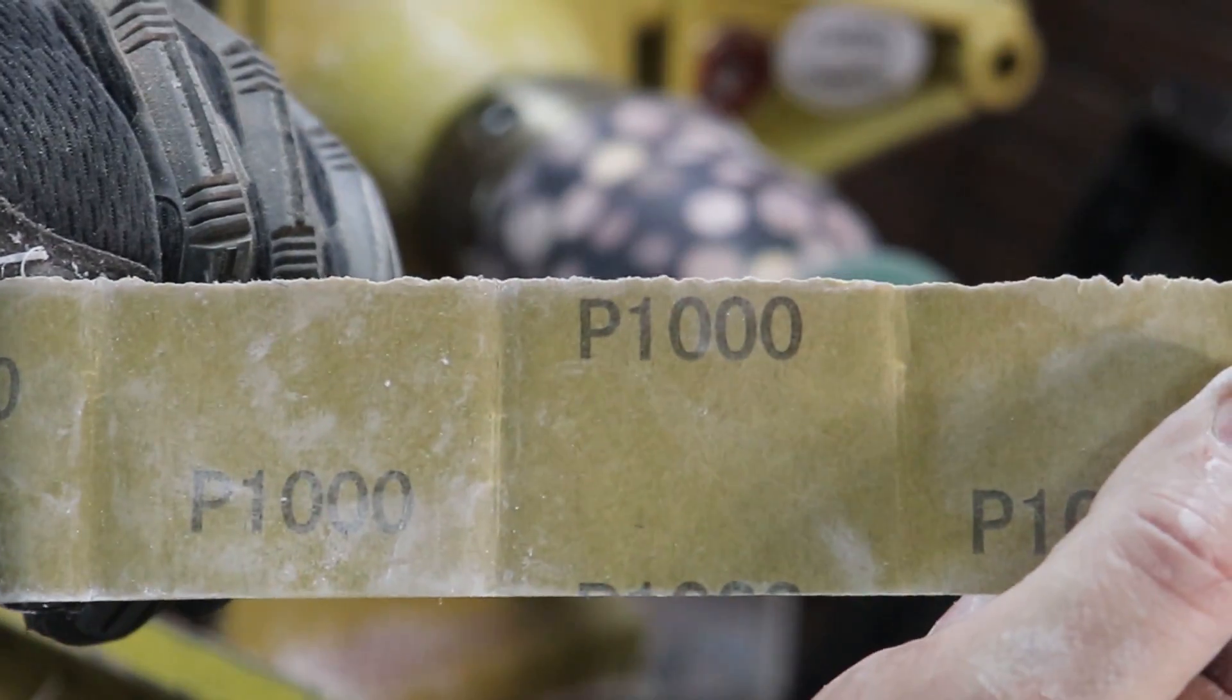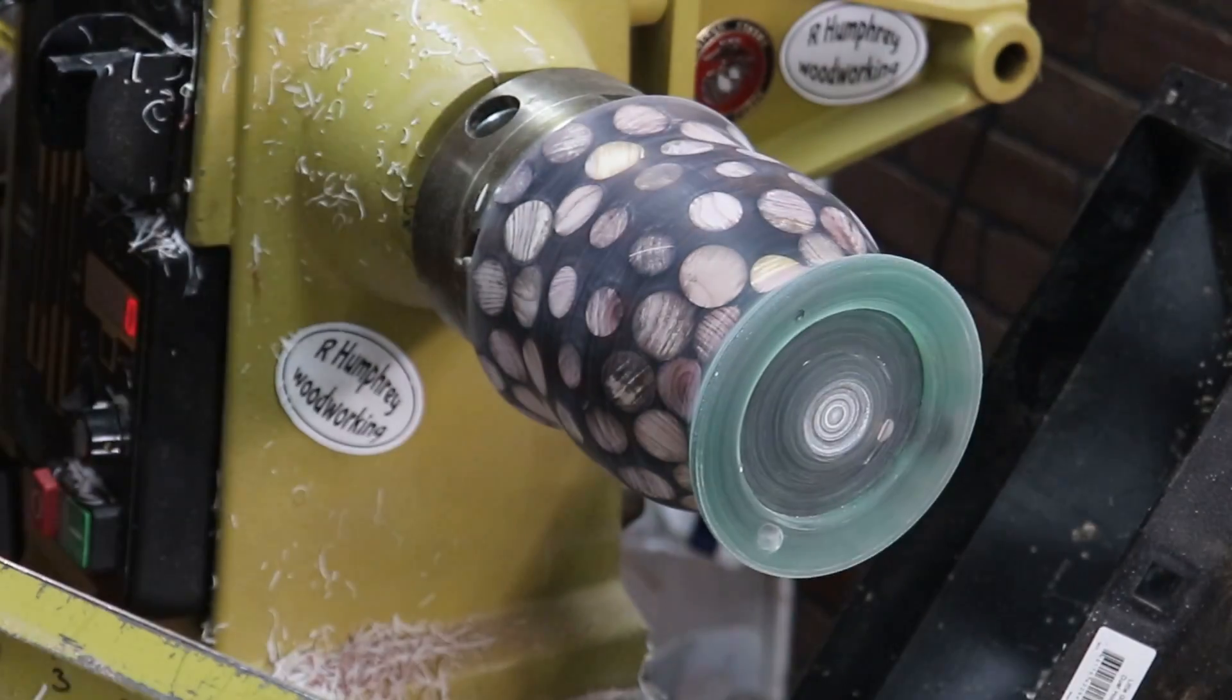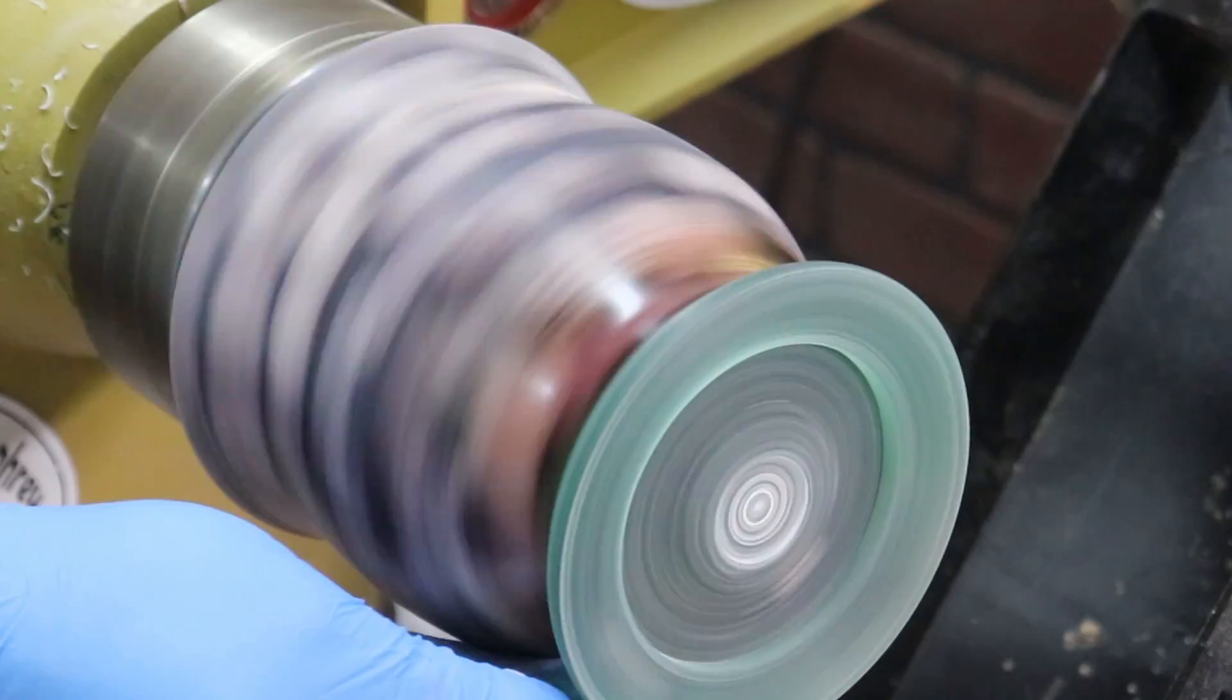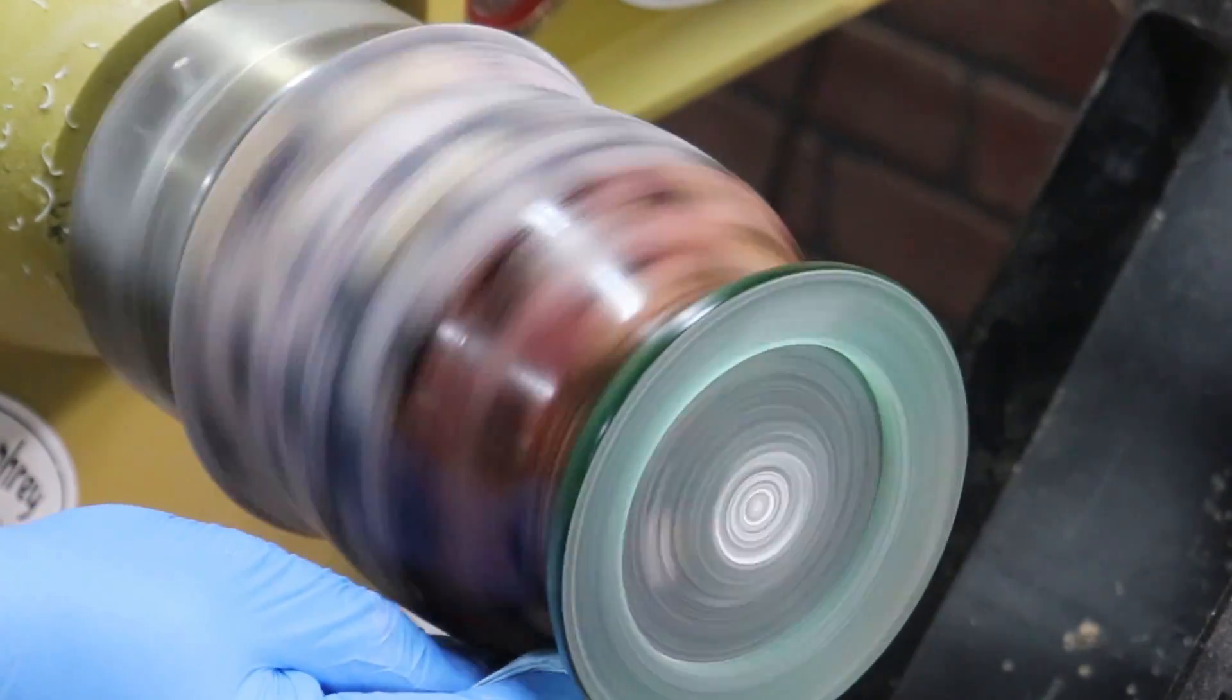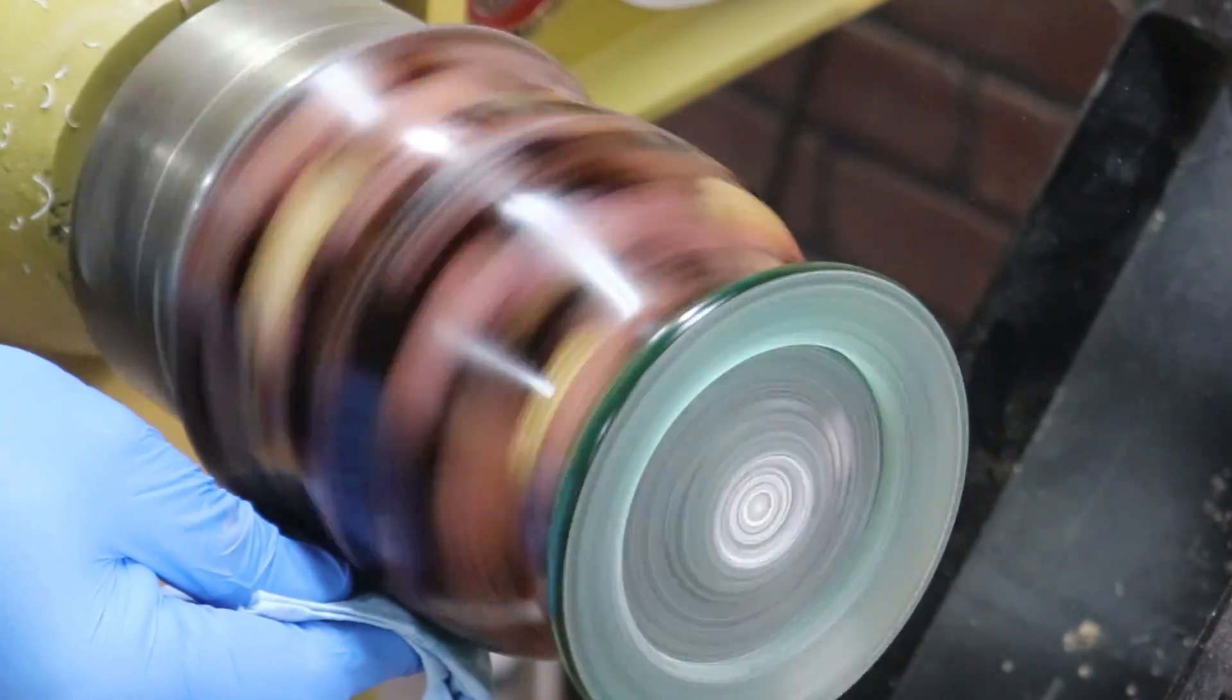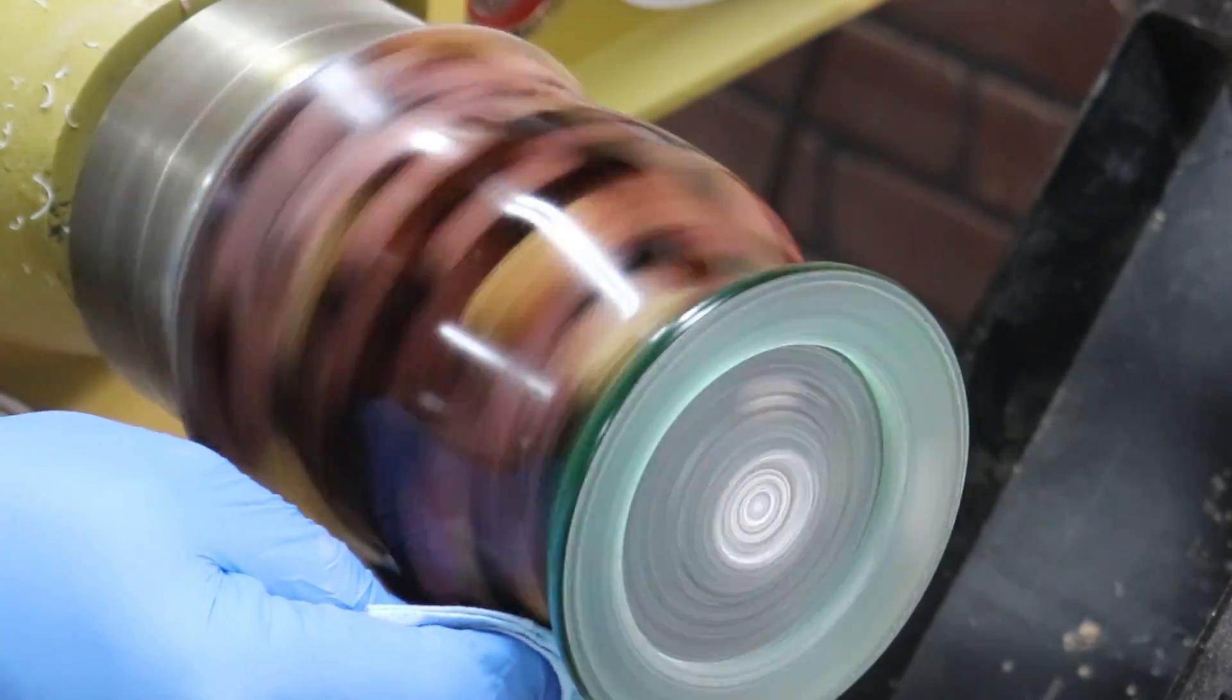I sanded from 120 up to 1000 grit. And then I applied some shine juice, quite a few coats.